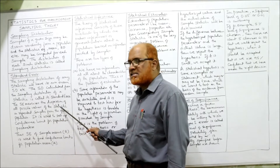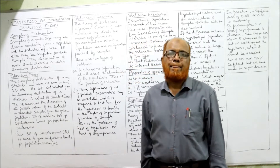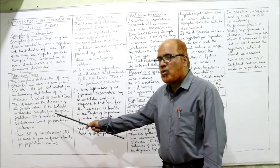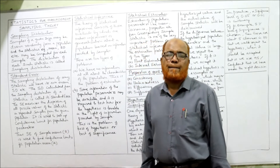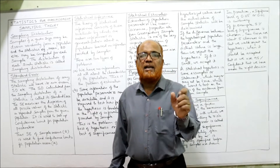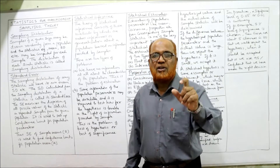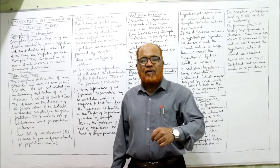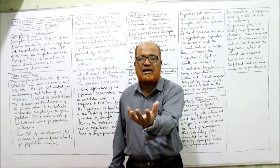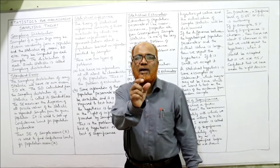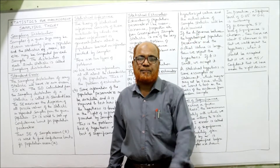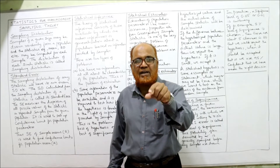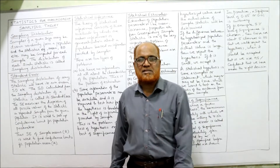Standard error measures the dispersion of all possible values of the statistic in repeated samples from the given population — how individual statistics are dispersed from the average. Standard error is used to set up confidence limits, that is the upper limit and lower limit within which the population parameter will lie. In estimation problems, we find out information about the population by studying the sample, and to establish this confidence limit we require standard error.